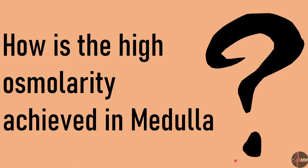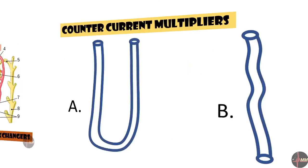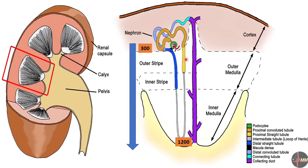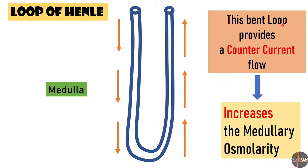So how is the high osmolarity achieved in the medulla? The answer is the counter current multipliers — that is, the loop of Henle — and the vasa recta, which acts as counter current exchangers. The loop of Henle has a bent loop shape, and because of this bent loop, the multiplication of osmolarity is going to happen, increasing medullary osmolarity.